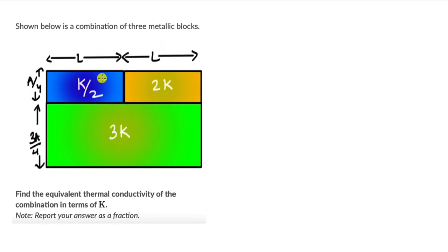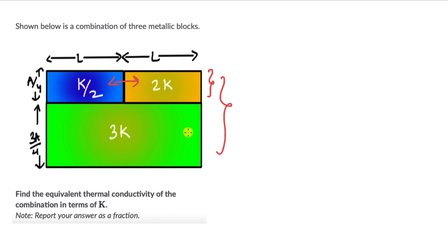For the second question, we have a combination of three metallic blocks and need to figure out the equivalent thermal conductivity in terms of K. The two top blocks are connected in series, and their combination is connected in parallel with the green block of thermal conductivity 3K. We'll first find the equivalent thermal conductivity of the top blocks, then find the equivalent for the entire combination.